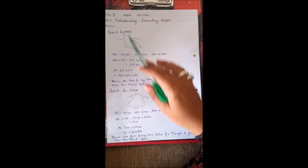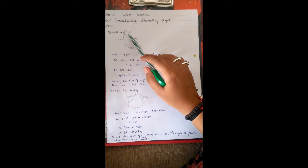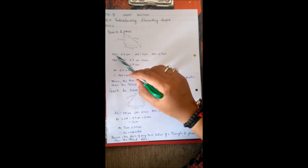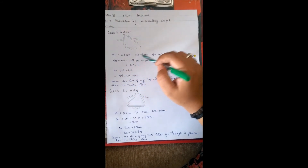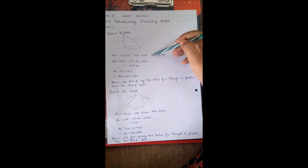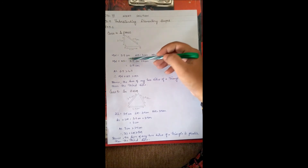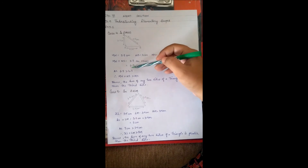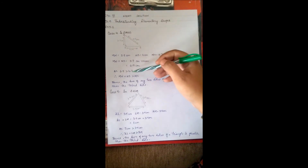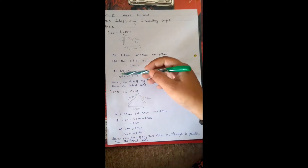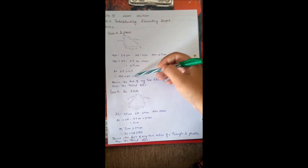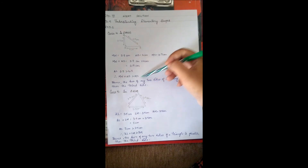Case 4 — Triangle MNS: MN = 2.7 cm, NS = 4 cm, MS = 4.7 cm. MN + NS = 6.7 cm, which is more than 4.7 cm. Therefore MN + NS > MS. Hence the sum of any two sides of a triangle is greater than the third side.